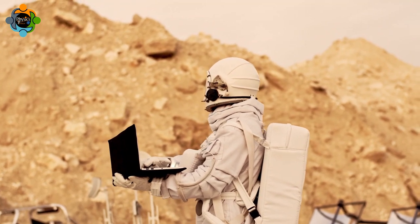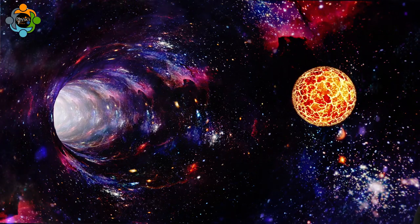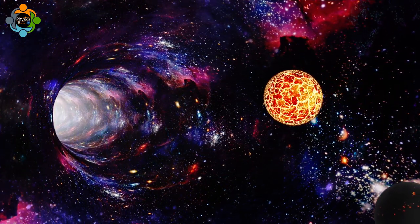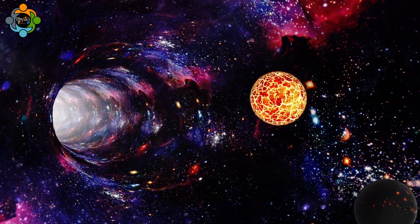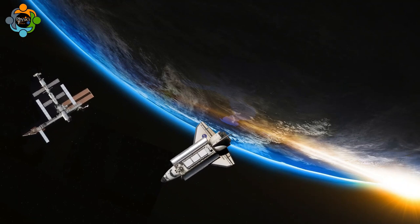With Kepler's second law, astronomers were able to accurately predict the positions of planets in the night sky and unravel the mysteries of the cosmos. This law fundamentally changed our understanding of the universe and laid the groundwork for modern celestial mechanics.